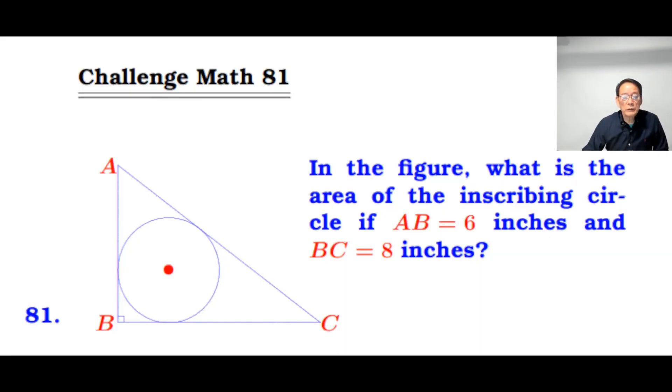Next time I will work out on this problem. In the figure here, what is the area of inscribing circle if AB equals 6 inches, which is the height of the right triangle, and BC is the base of the right triangle which is 8 inches. You have a right triangle with an inscribed circle, and the question is what is the area of the circle. See you next time. Thank you.